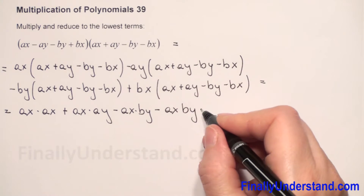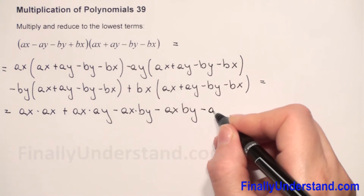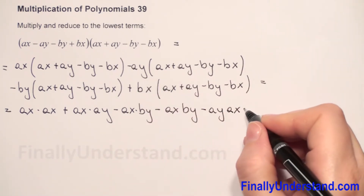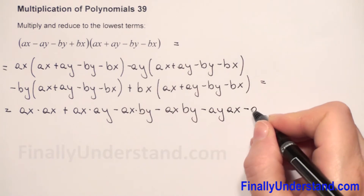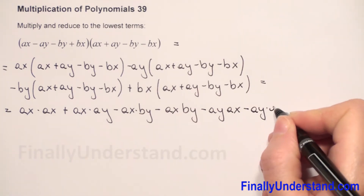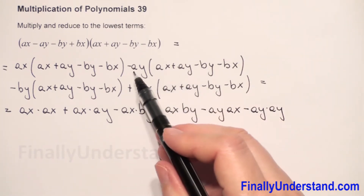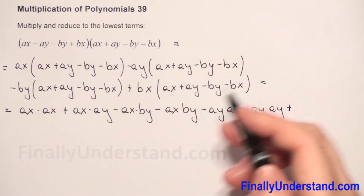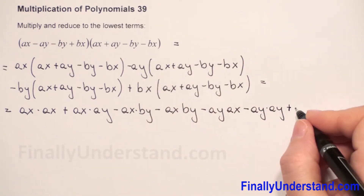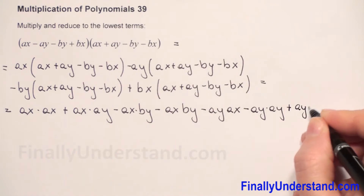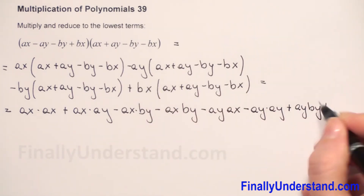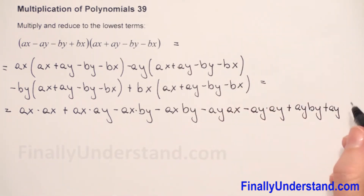And now we have negative times negative, so we will be positive. AY times BY. Negative times negative gives me positive. AY times BX.